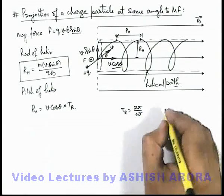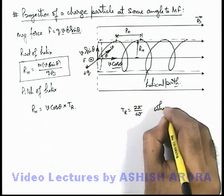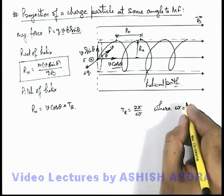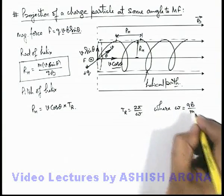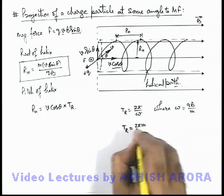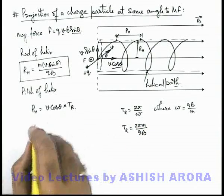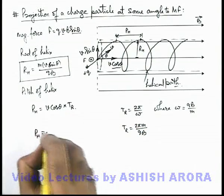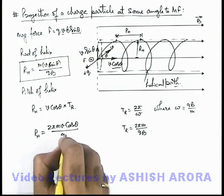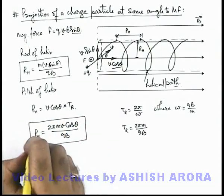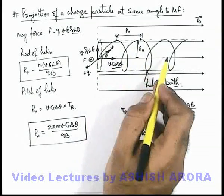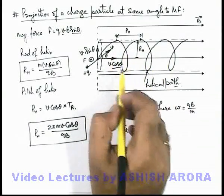We already studied that the value of angular speed is independent of the velocity of the particle in a magnetic field, given as qB/m. So the time period of revolution is 2πm/qB. Substituting this, the pitch of the helix becomes p_h = 2πmv cos theta / qB. This is the expression for calculating the pitch of the helical path — the distance covered by the particle along the direction of magnetic field during one revolution.